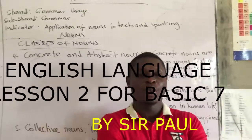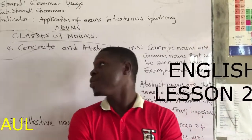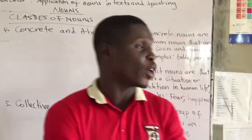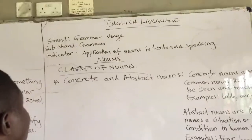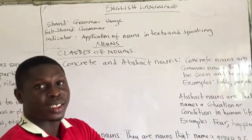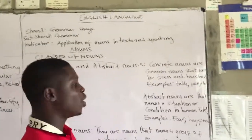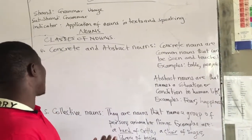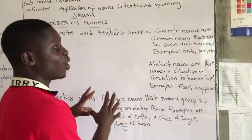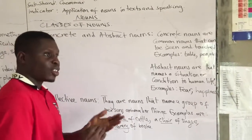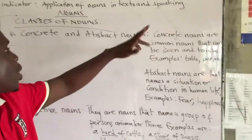Hello learner, how are you doing today? We are going to continue with our lessons on grammar. Today we make sure we complete the classes of nouns. In our previous lessons we discussed common nouns, proper nouns, count and non-count nouns. Today we are going to look at concrete and abstract nouns and then collective nouns. As you grow higher you learn the other classes, so let's move on quickly.